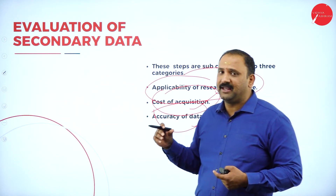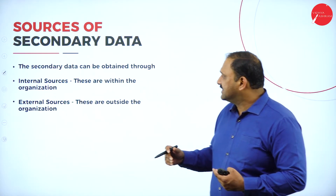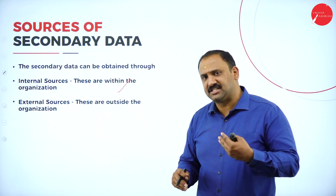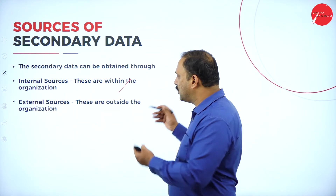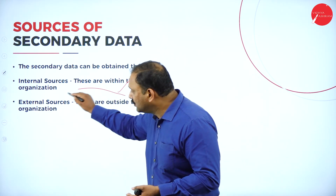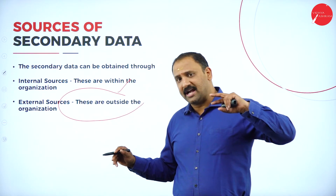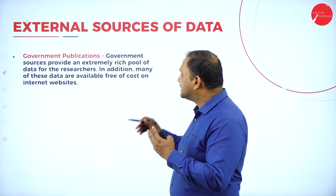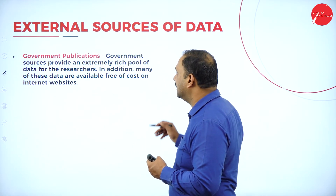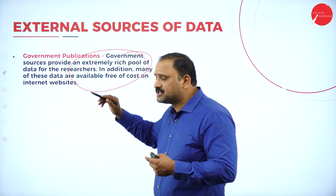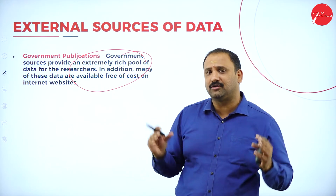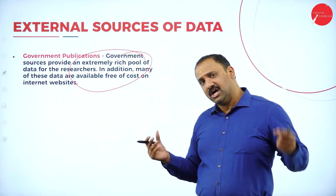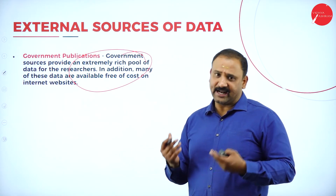Secondary data can be obtained through internal sources — from within the organization, from your own people, from processes, or from technology you have built — and from external resources outside the organization. Government publications are typical external resources that provide an extremely rich pool for researchers, with whole lots of data on levels of operation and many free websites from which you can download data as per your need.